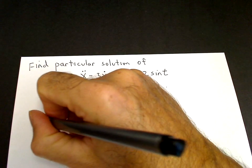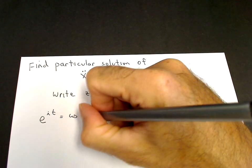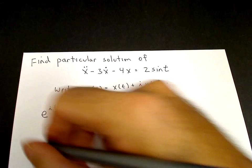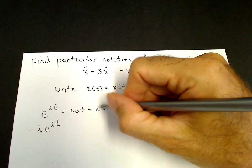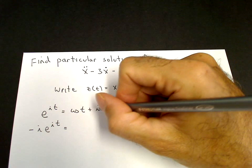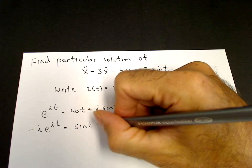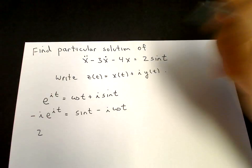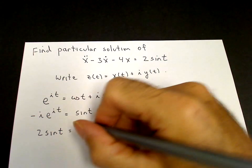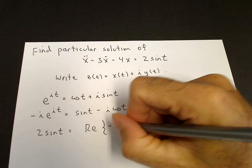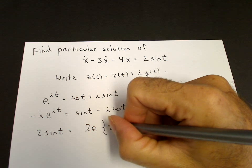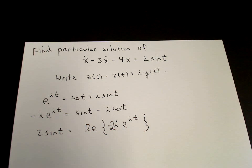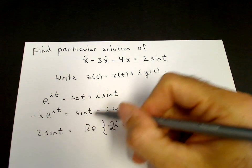We know that e to the it equals cosine t plus i sine t. If we multiply by minus i, then minus i times e to the it gives us: minus i times i is 1, so that gives sine t, and then minus i times cosine t. So we can write 2 sine t as the real part of minus 2i times e to the it.